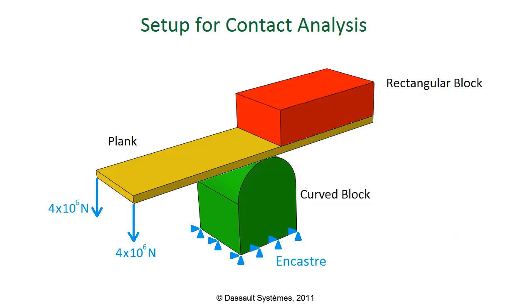We will now demonstrate the general contact method by modifying the example from the contact pairs tutorial. To refresh our memory, we have three parts: a curved block, a rectangular block, and a plank. The curved block is fixed on the bottom, and the plank is fixed at one end making it a cantilever. Two concentrated forces are applied on the free end of the plank, pushing it downward so that it bends around the curved block. At the same time, the rectangular block holds the top surface of the plank flat, preventing it from arching upwards.